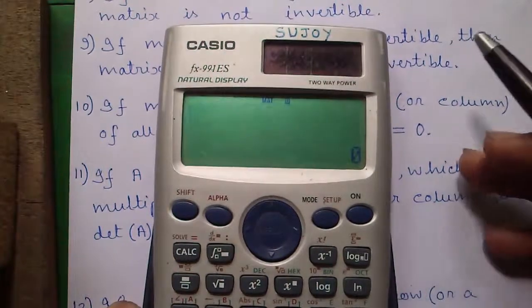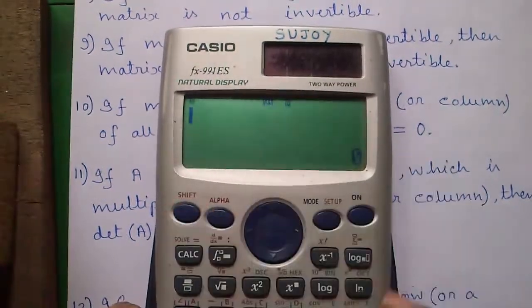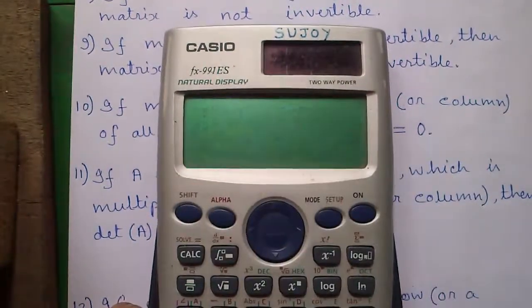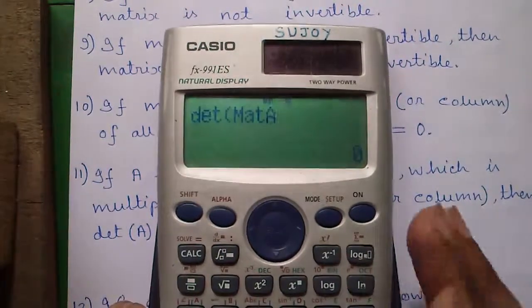So the determinant of matrix A will be 0. Let's give it a try. Yeah, it's 0.